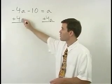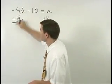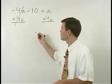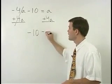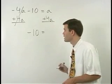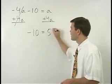On the left, minus 4a plus 4a cancels and we're left with negative 10. On the right, a plus 4a simplifies to 5a.